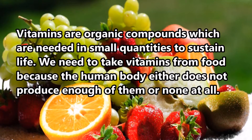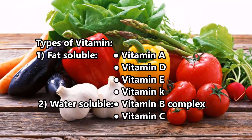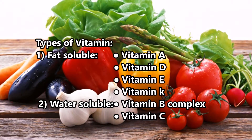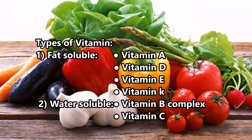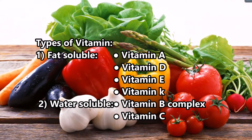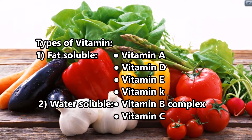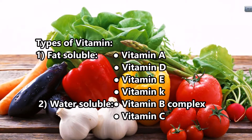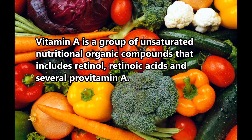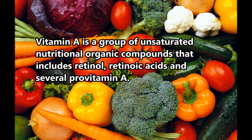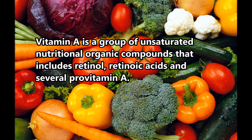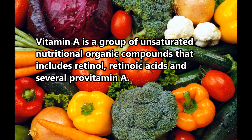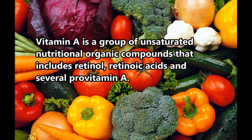Types of vitamins: 1. Fat-soluble — vitamin A, vitamin D, vitamin E, vitamin K. 2. Water-soluble — vitamin B complex, vitamin C. Vitamin A is a group of unsaturated nutritional organic compounds that includes retinol, retinoic acids, and several pro-vitamin A compounds.